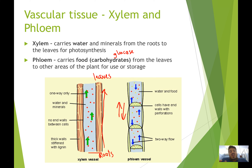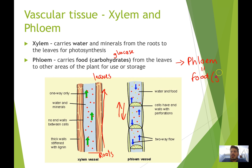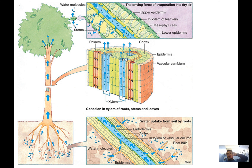A good way to remember which is xylem and which is phloem: phloem — that 'PH' sound makes the same sound as the 'F' in food — so phloem is for food, which is where we get the glucose. Xylem, on the other hand — X and W are close in the alphabet, so xylem carries water. Now let's talk about how we actually get movement of water in the plant.